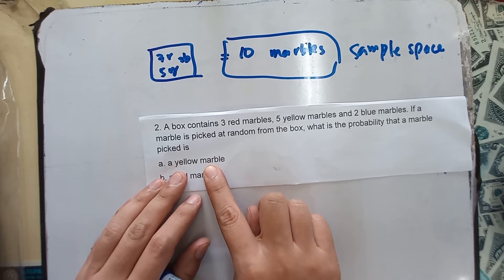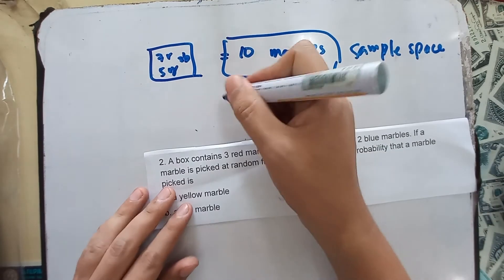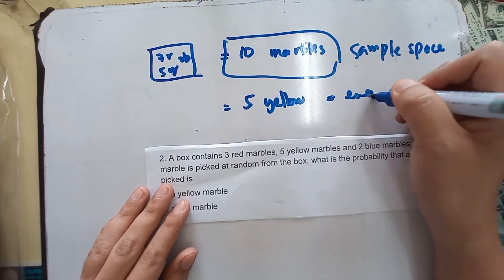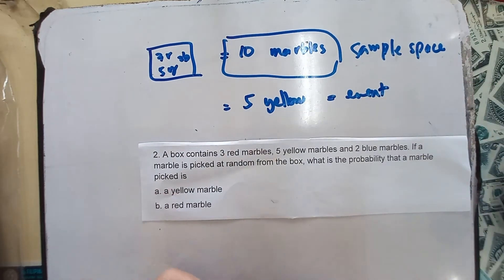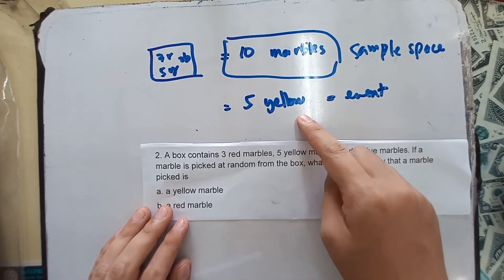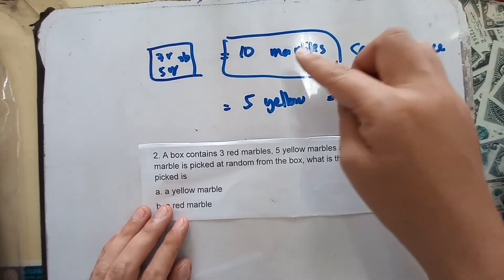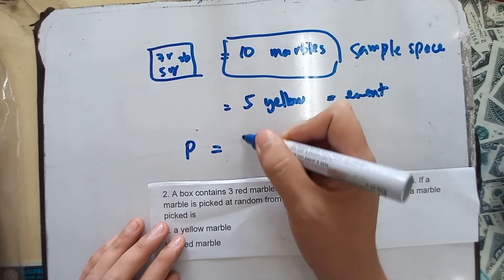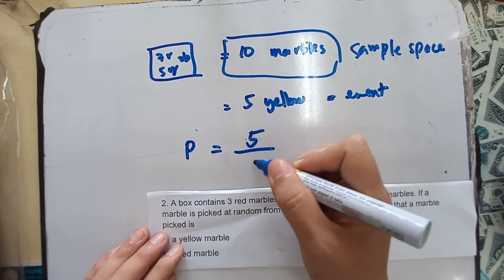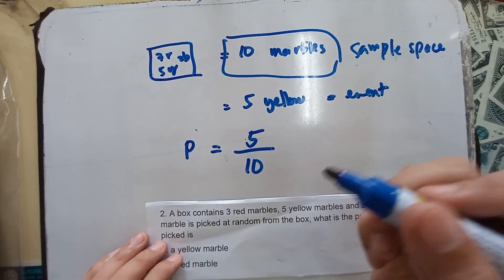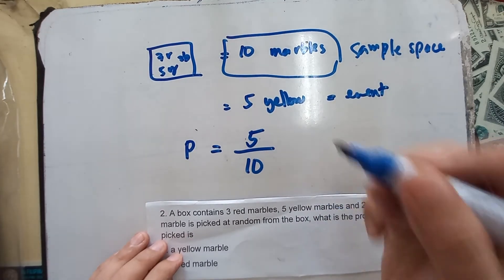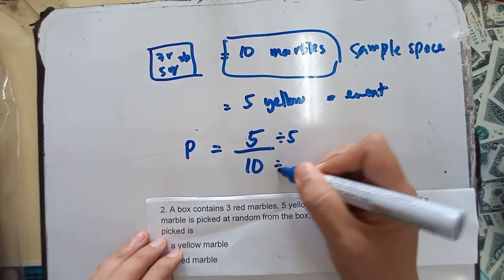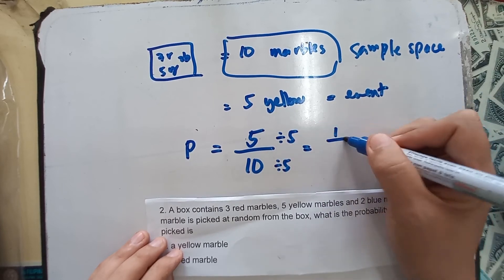How many yellow marbles are there in the box? There are five yellow marbles. Since you are going to pick a yellow marble out of ten marbles, and there are five yellow marbles, the probability is five over ten. Let's reduce this to lowest terms: divide by five over five, and that equals one over two, or one half.